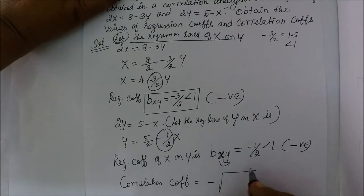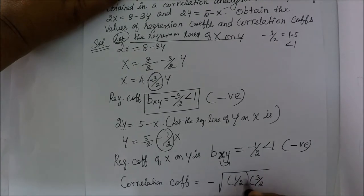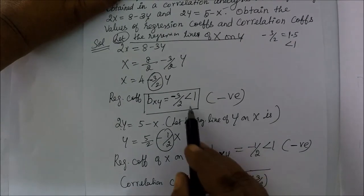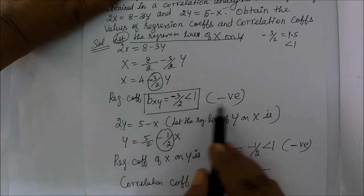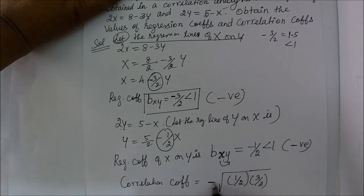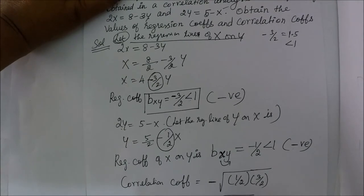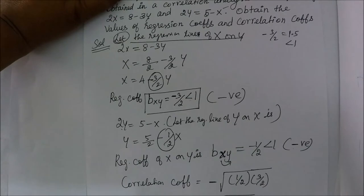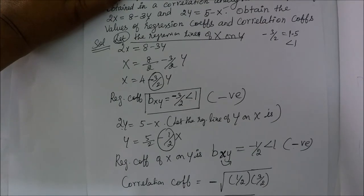We will add minus. We will add half, then 3 by 2. We will add minus and minus into minus plus. The answer is less than 1. The negative value is negative. So that is equal to minus square root of 3 by 4. We have the value of root 3 is 1.732. That is divided by 4. That is equal to minus 0.866.